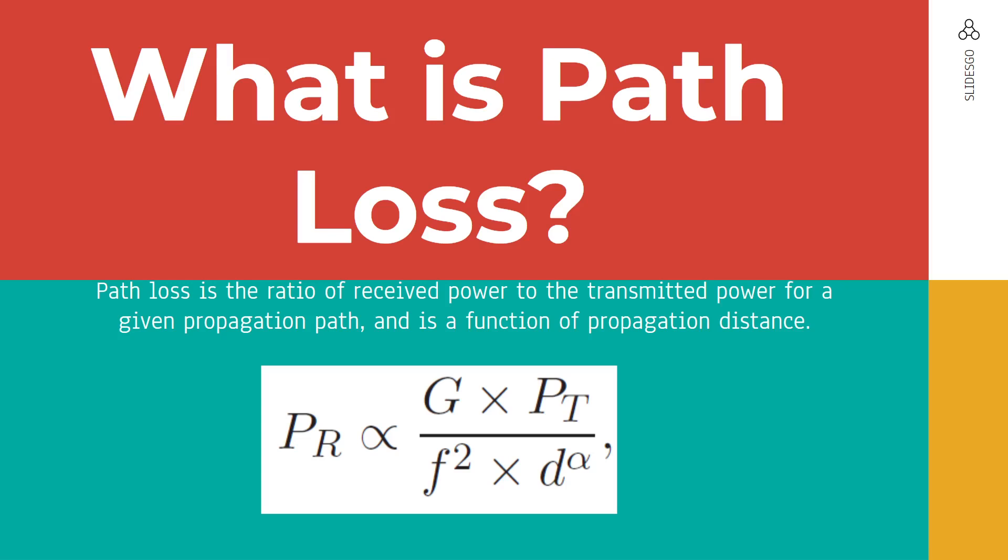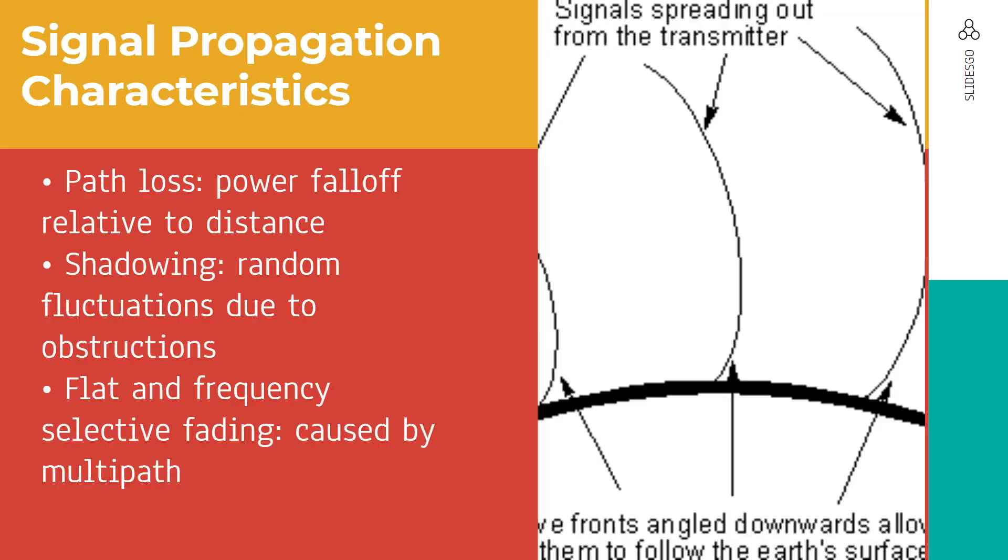So what is the signal propagation characteristic? The path loss itself is the power fall off relative to distance. For shadowing, it means the random fluctuation due to obstruction like buildings, etc. And the next is flat and frequency selective fading, which is caused by the multipath.